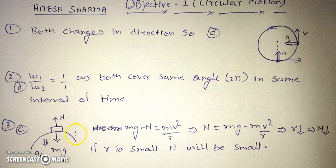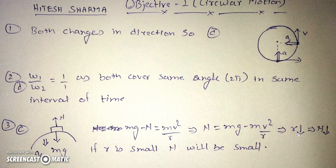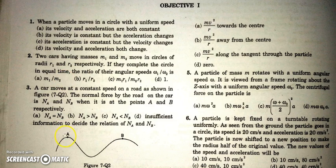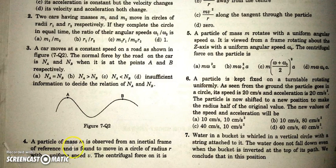B is flatter so its radius is large; A is a sharp curve so its radius is small. At any convex surface, since the center of the circular part is below, mg minus N provides the centripetal acceleration, so N equals mg minus mv²/r. If r is small, mv²/r is large, so N will be small. Therefore at point A, where r is small, N_A is smaller than N_B.